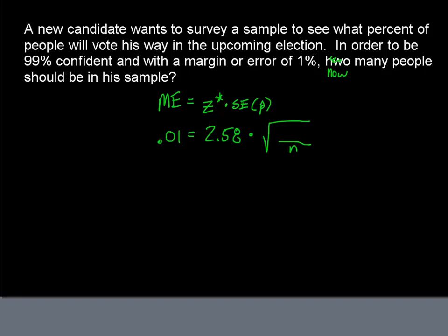When you have no idea what to use for P-hat and Q-hat, use 50-50. In an election, 50% is the cutoff — if more than 50% vote for you, you win; if less, you lose. So use P-hat = 0.5 and Q-hat = 0.5. Divide both sides by 2.58: 0.01 ÷ 2.58 = 0.0039 — store that. Then 0.5 × 0.5 = 0.25. Square both sides to eliminate the square root — you get approximately 0.000015.